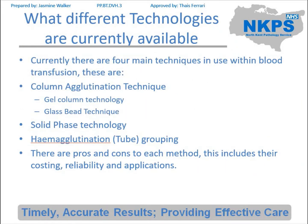Currently there are four main techniques in use within blood transfusion. These are column agglutination technology, which is broken down into two: gel column technology and glass beads technology; solid phase technology or plate technology; and haemagglutination technology, most commonly known as tube grouping. Each of these has pros and cons and it's very important that you are at least aware of them in case you have an analyzer change, as it'll make it a lot easier to read the results.